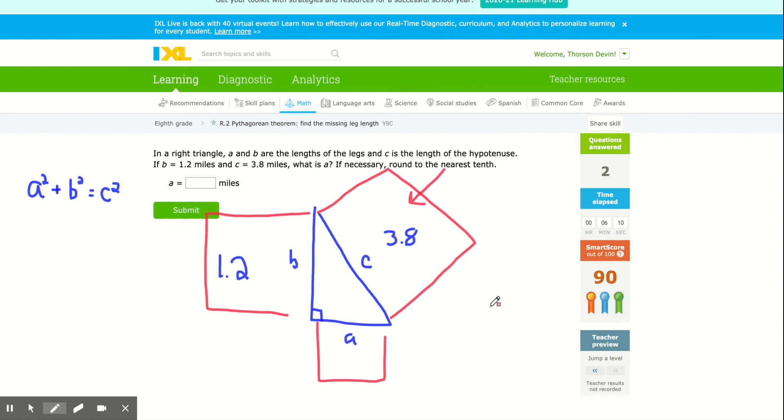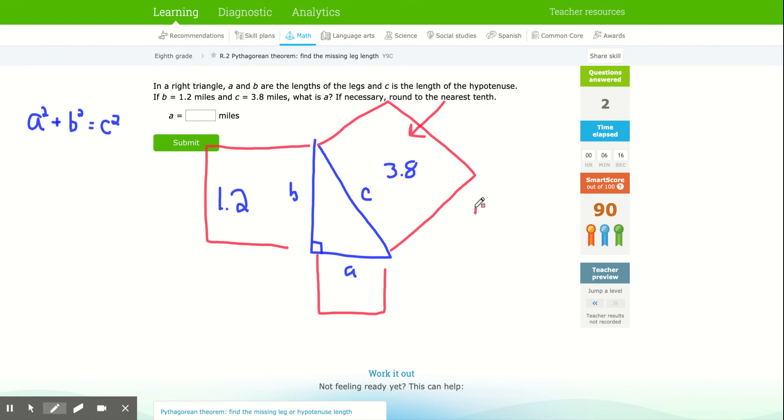So I'm going to square 3.8. 3.8 times 3.8. It's going to be 14.44.